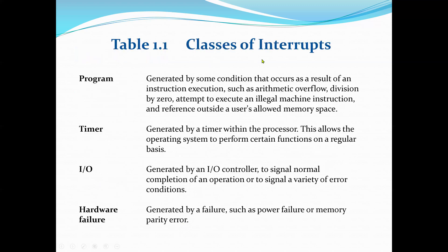There are different types of interrupts. A program interrupt is normally generated by some condition that occurs as a result of an instruction execution, such as arithmetic overflow, division by zero, or an attempt to execute an illegal machine instruction. A timer interrupt is normally generated by the timer within the processor, allowing the OS to perform certain functions on a regular time basis. An I/O interrupt is generated by the I/O controller to signal completion of an operation or a variety of error conditions. A hardware failure interrupt is generated by failures such as power failure or memory parity error.